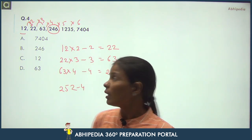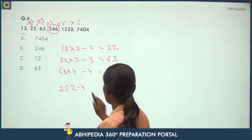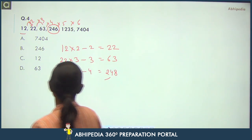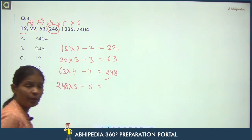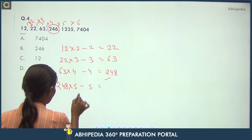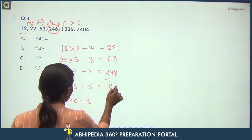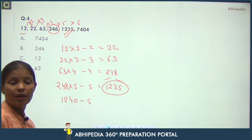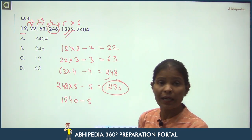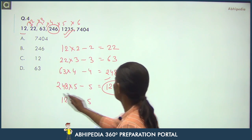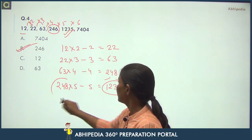For verification: apply the same logic to 248 × 5 − 5 = 1235. Check: 248 × 5 = 1240 − 5 = 1235. The series shows 1235 — correct! So 246 is confirmed as the wrong term and in place of 246 there should be 248. Your answer is 246.